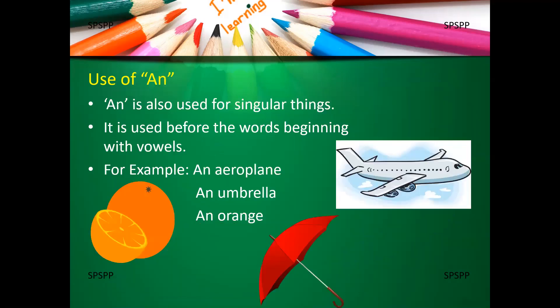Use of an. An is also used for singular things means one thing. It is used before the words beginning with vowels. For example, an aeroplane means one aeroplane. The word aeroplane begins with the letter A. It is a vowel and we say an aeroplane. An umbrella. An orange.